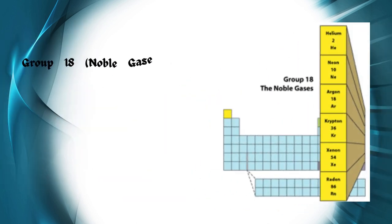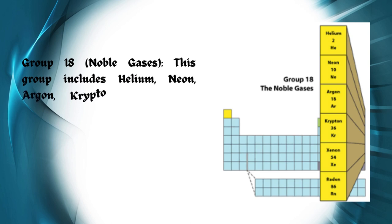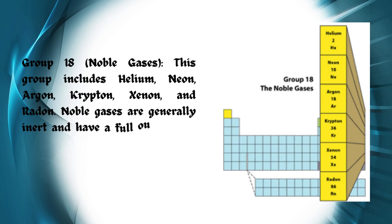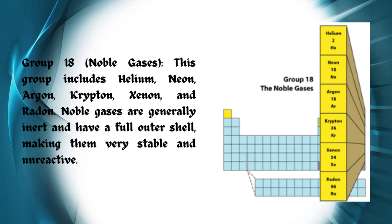Group 18, Noble Gases: This group includes helium, neon, argon, krypton, xenon, and radon. Noble gases are generally inert and have a full outer shell, making them very stable and unreactive.